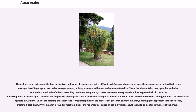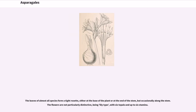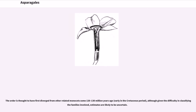Phytomelanin is found in most families of the Asparagales, although not in Orchidaceae, thought to be a sister to the rest of the group. The leaves of almost all species form a tight rosette, either at the base of the plant or at the end of the stem, but occasionally along the stem. The flowers are not particularly distinctive, being lily-type, with six tepals and up to six stamens.